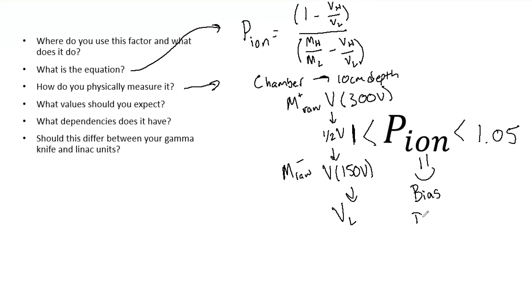And then finally we also have our dose rate. The dose rate changes the density of the charge cloud within the chamber, and that is going to alter our P ion.